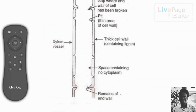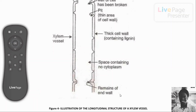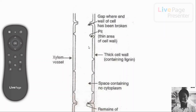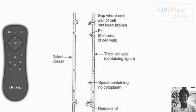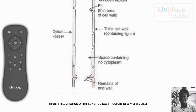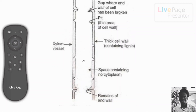Here we have an illustration of the longitudinal structure of a xylem vessel. We can see the long, narrow, and hollow tube and the thick cell wall containing lignin. The cell wall is lignified, but there are also thin areas called pits. Notice the gap where the end walls of two xylem cells came together and broke down — only the remains of the end wall are visible, completely broken down to allow the free passage of water and dissolved minerals.